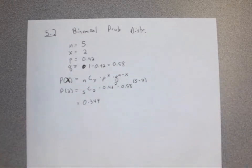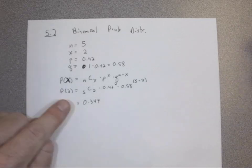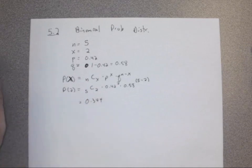So there's a 34.4% probability that if I randomly choose five people, and 42% of the population is comfortable with drones, exactly two of them are comfortable with it.